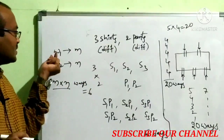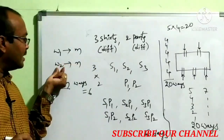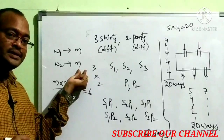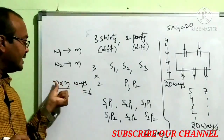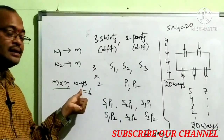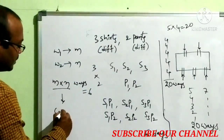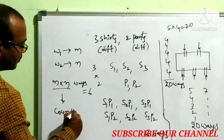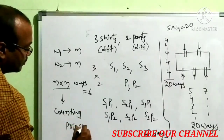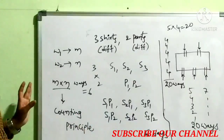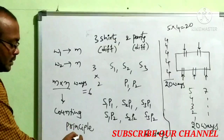The first work W1 can be performed in M ways. The second work W2 can be performed in N ways. Two works simultaneously can be performed in M × N ways. This is called the fundamental principle, or counting principle.